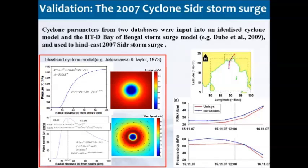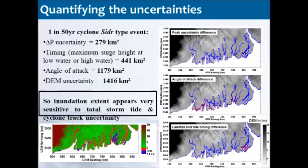We calibrated the system against the Cyclone Sidr example to make sure it behaves well when using the best hindcast. Taking an event we thought was a one-in-50-year cyclone, we pooled all hurricane tracks in the Bay of Bengal and tested for some independence. Taking plus or minus one standard deviation, the central pressure put into these parametric cyclone models results in a different inundated area — the difference is approximately 300 square kilometers.